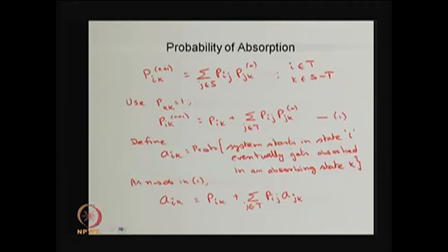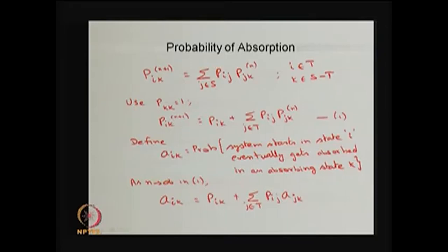Our interest here is the probability of absorption, because we have one or more absorbing states. If the system starts from some transient state, what is the probability that the system will be absorbed into an absorbing state? For that I am going to start with the Chapman-Kolmogorov equation: the n+1 step probability of going from state i to k equals the sum over all j in S of the one-step probability from i to j times the n-step probability from j to k.